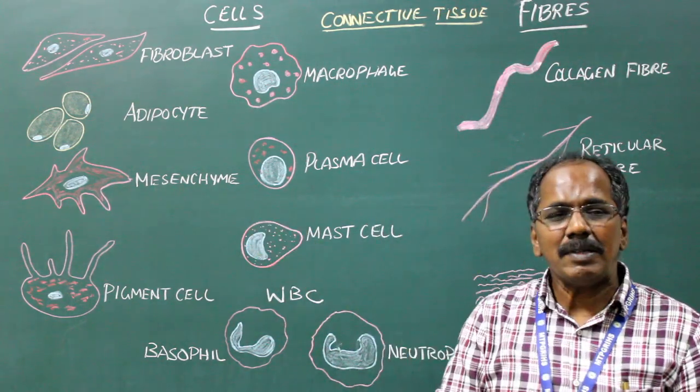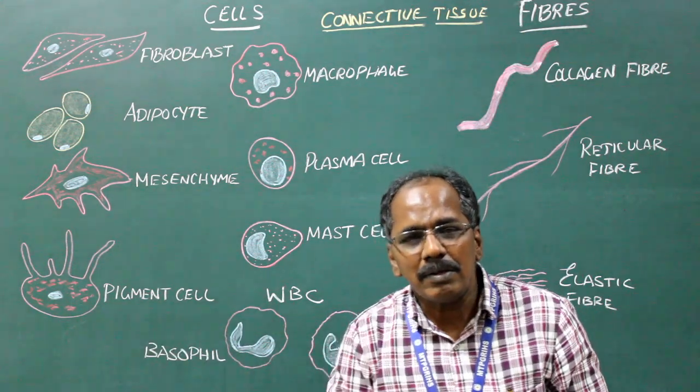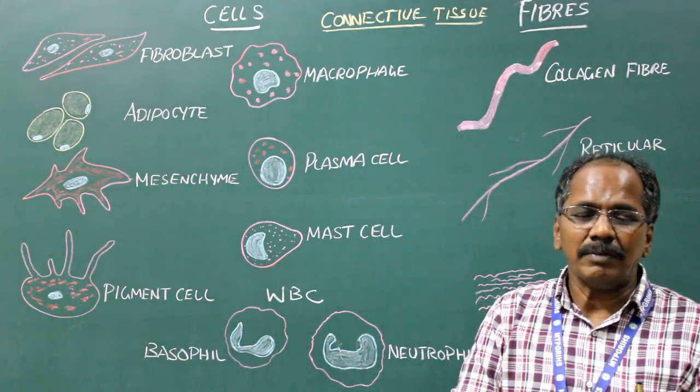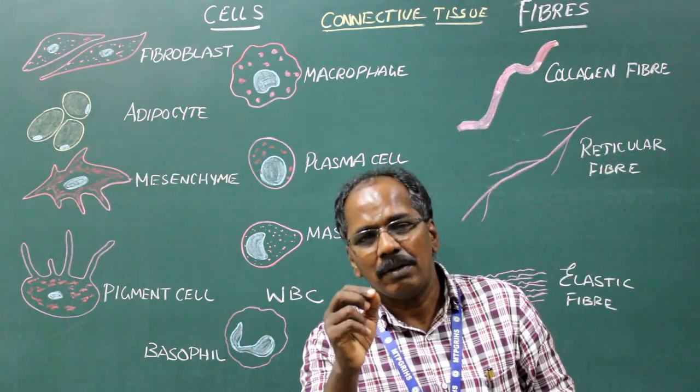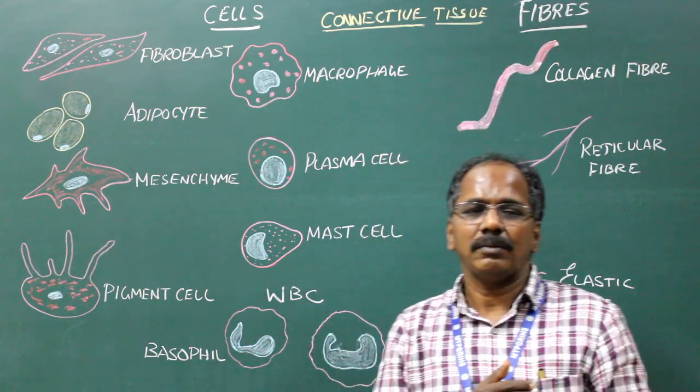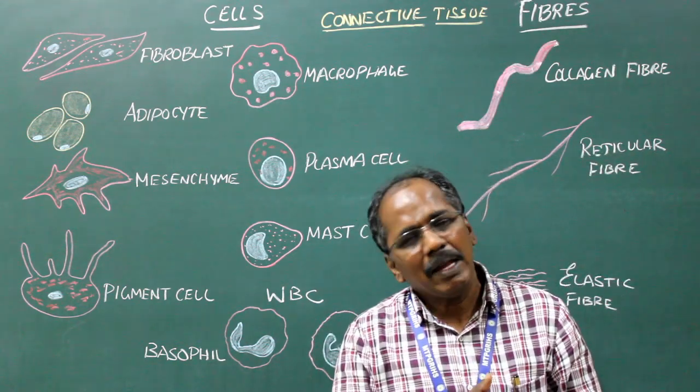Pigment cell: The pigment cell or melanocytes are derived from neural crest cells. They contain a pigment in the cytoplasm known as melanin. Examples: skin, choroid and iris.